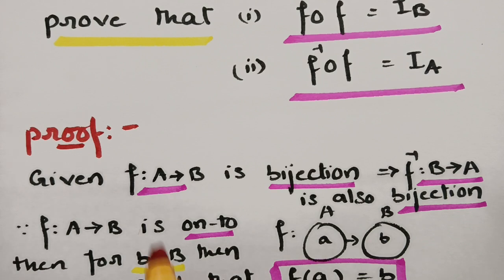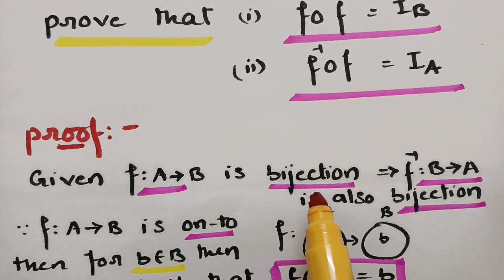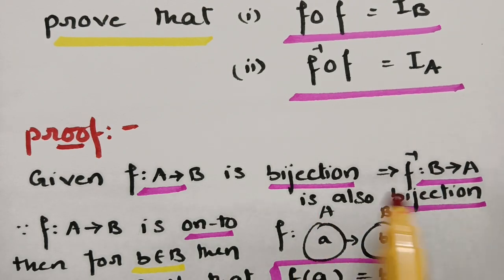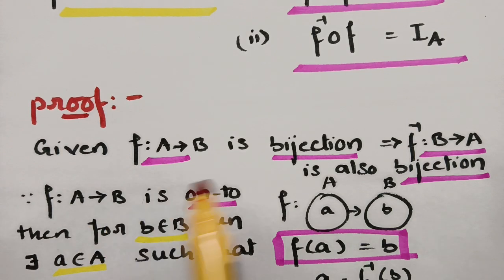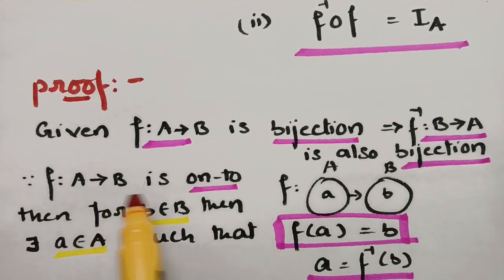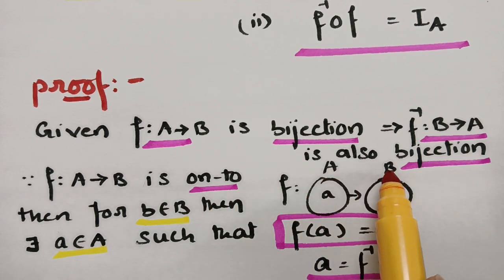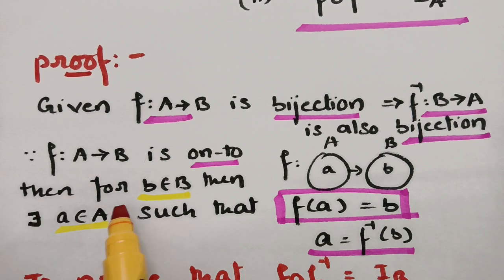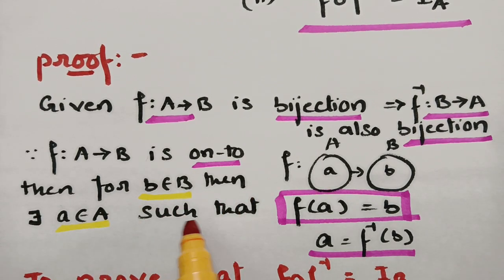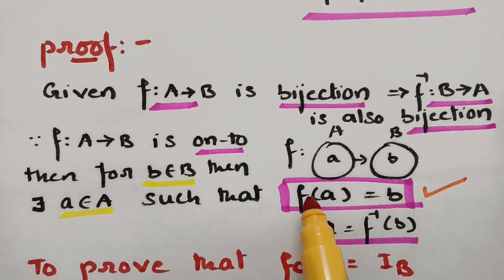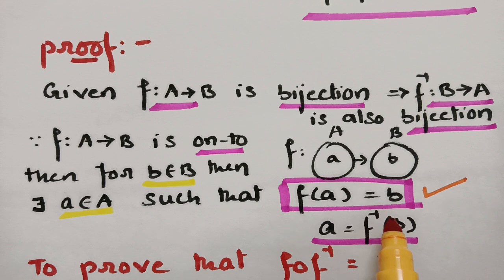In the proof, what is given? f maps from A to B is a bijection. And obviously, you know that f inverse maps from B to A — it's an inverse thing, we interchange the sets. B to A is also a bijection. So from the bijection, f is one-one and onto. Selecting the onto property: f maps from A to B is an onto function. Then for small b belonging to capital B, there exists small a belonging to capital A such that f of a is equal to b. If we send f to the other side, it becomes inverse. Therefore, a is equal to f inverse of b. I will use these two equations whenever needed.